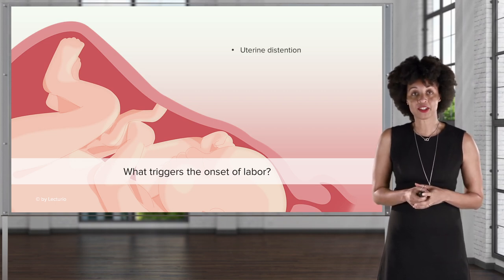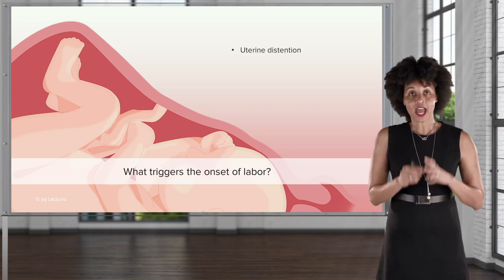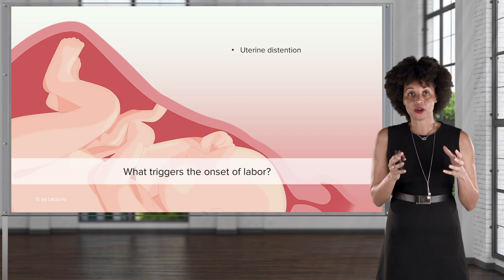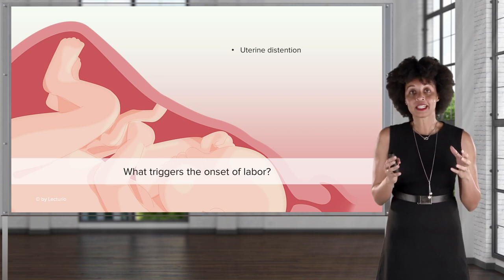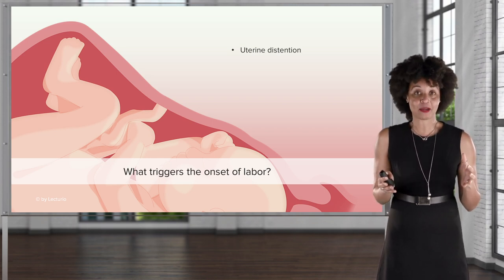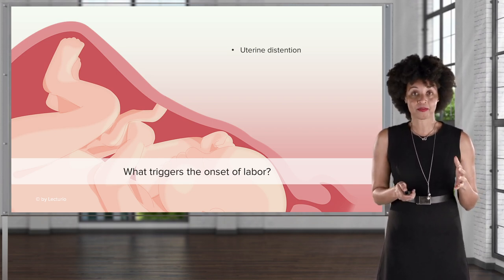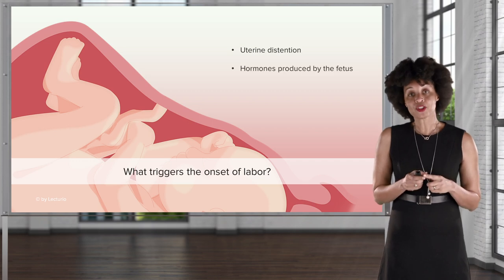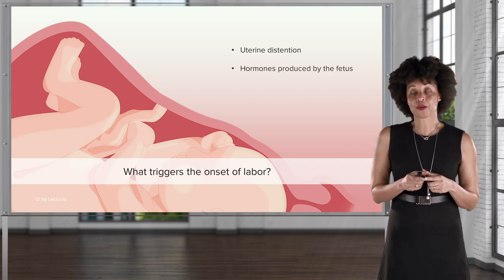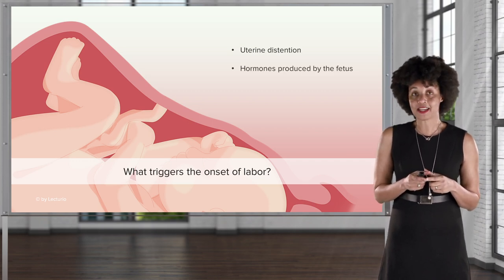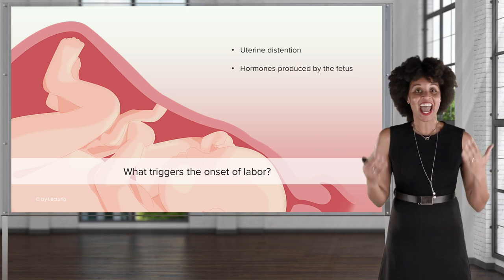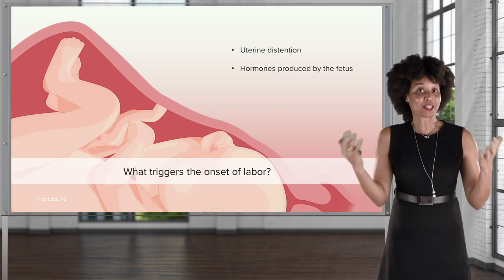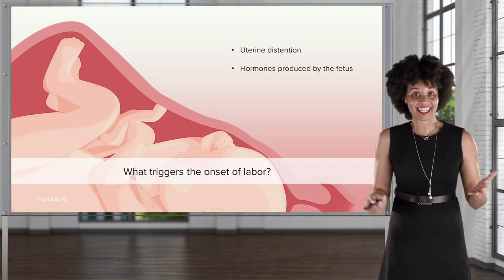The first trigger is uterine distension. As the fetus grows, it actually sends a signal to let the body know that it's time for labor to start. There are also hormones produced by the fetus that may send a message that the baby is ready and it's time for labor to begin.